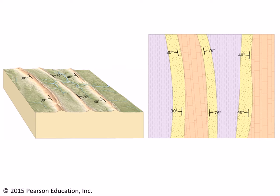Today's lab will have you looking at example landscapes and structural information — the strike and dip of the strata. In this case, we've got a series of three linear mountain ridges. The leftmost ridge has strata dipping at 30 degrees off towards the left side of the picture. This is also true for the ridge on the far right — the dip is slightly different at 40 degrees, but they're still dipping off to the left. Whereas the ridge in the middle has the same strata dipping off to the right at a steeper angle of 76 degrees.